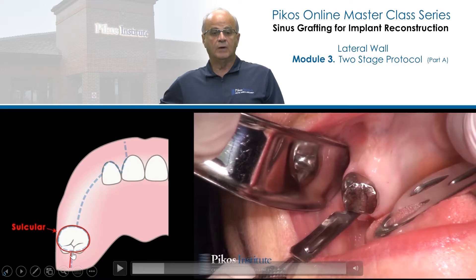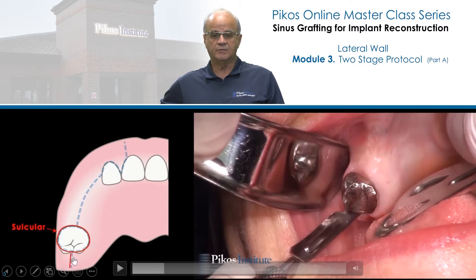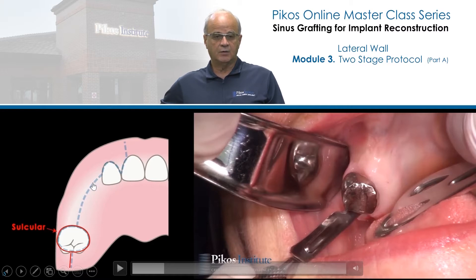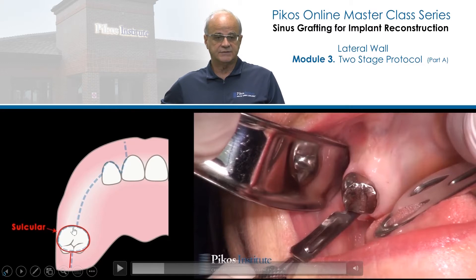Now why? Well, number one reason: I may want to harvest some of this bone from the tuberosity and use it as an autogenous bone graft. Number two: I have a much broader area to work from if I do want to use any of this lateral wall — for example with a bone scraper and harvest even more bone — then I have that ability. And thirdly, we just have better access in general.